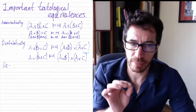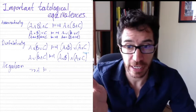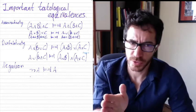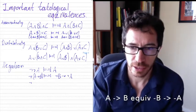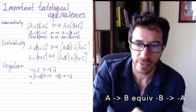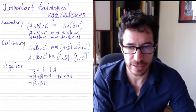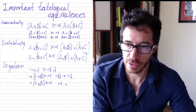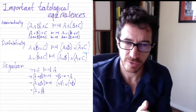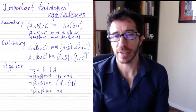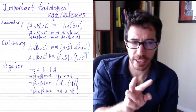Let's look at the negation. The negation of the negation of A is equivalent to A, as you'd expect — easy to verify with a truth table. Then the De Morgan laws: not (A and B) is equivalent to not A or not B, and not (A or B) is equivalent to not A and not B. If it's not true that A and B, then either A is false or B is false. If it's not true that A or B, then both A and B are false.